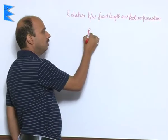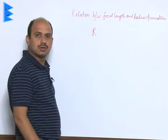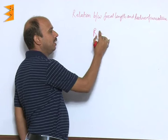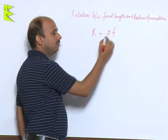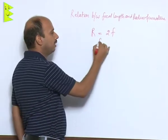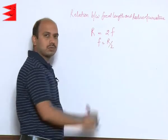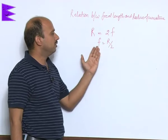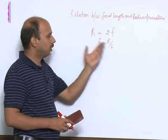R is for the radius of curvature, focal length is f, so we can write here R is equal to 2f or you can write f is equal to R by 2. What type of mirror you are using, whether it is convex or concave, this formula is applicable.